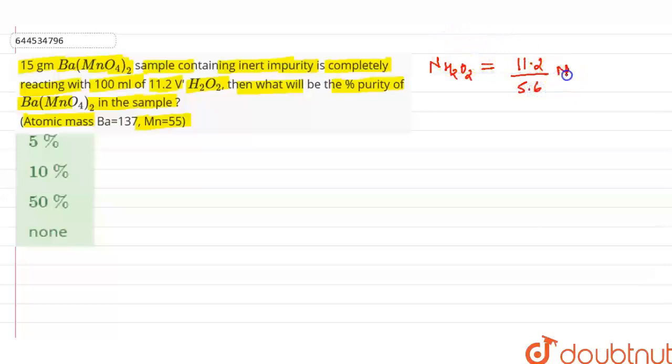Okay, now milliequivalent of Ba(MnO4)2 is equal to 2 into 100, which means 200 milliequivalent or 0.2 gram equivalent.